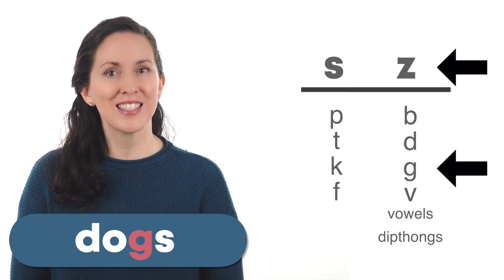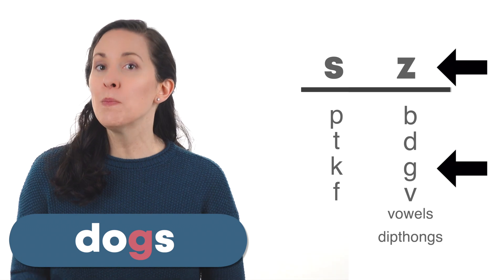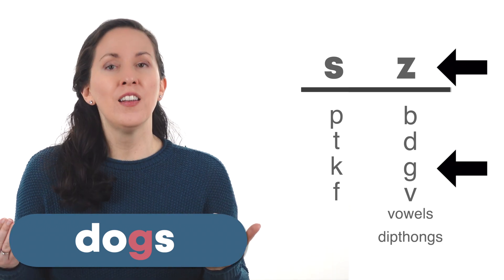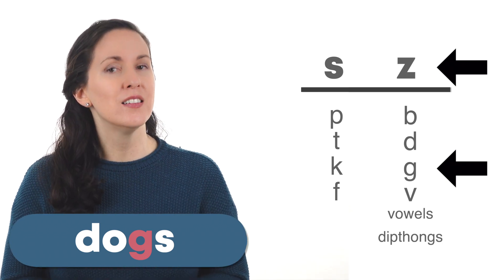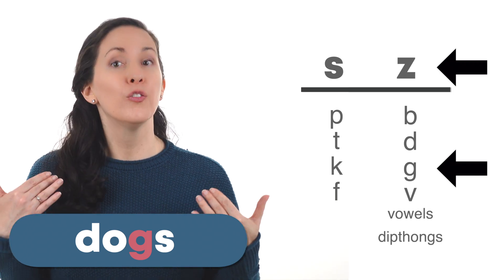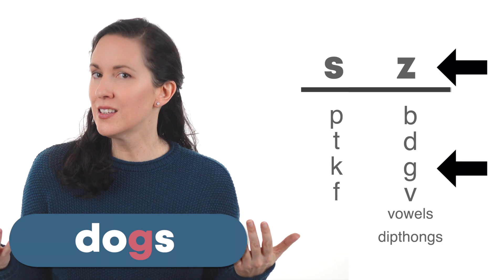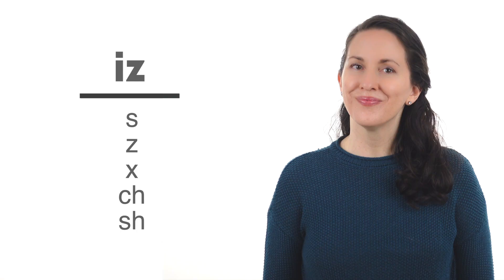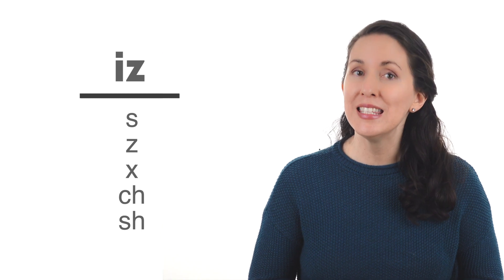Dogs. It would be more difficult and unnatural to say dogs. Dogs flows together much easier and more natural. What about plural S with the IS ending?